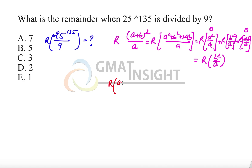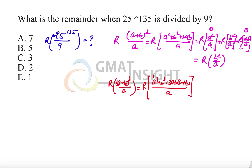Let's apply this in another context. If we find the remainder when (a + b)³ is divided by a, we expand to get a³ + b³ + 3ab(a + b). The terms a³ and 3ab(a + b) are all multiples of a, so they leave remainder zero. The result is the same as the remainder when b³ is divided by a. Whenever we have a bigger number, we break it into one part divisible by the divisor and one part that is not.